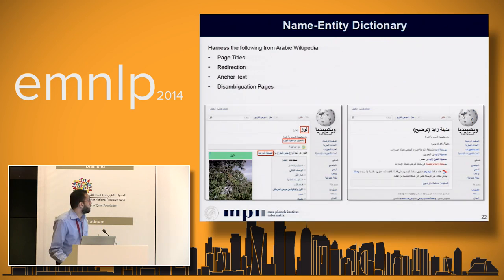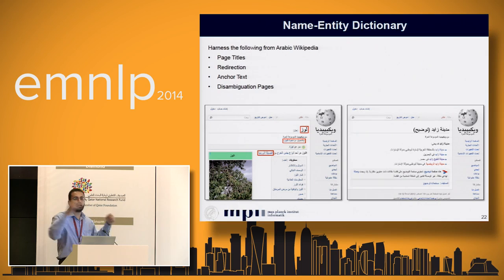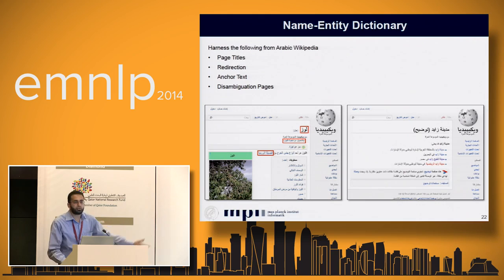For the name-entity dictionary, we use page titles, redirects — for example, 'Sugar to Laws' redirecting to 'Laws' gives us both as different names for the same entity — and anchors, where anchor text links to an entity and is added to the dictionary. We also use disambiguation pages: for example, from 'Medina Zayed' we get different possible entities and add all those entries to our dictionary.